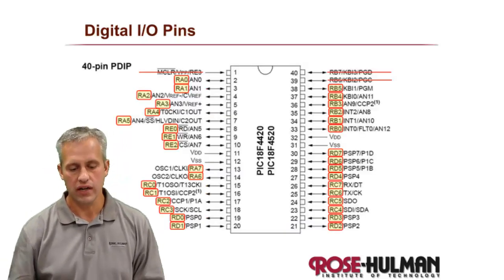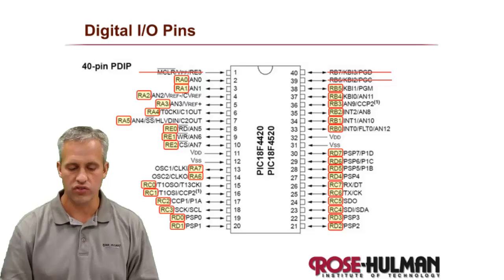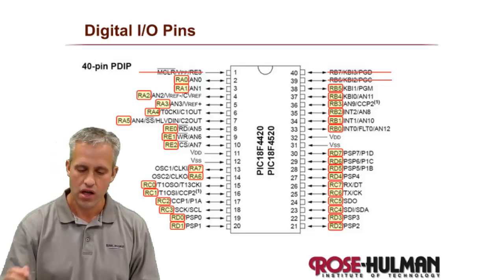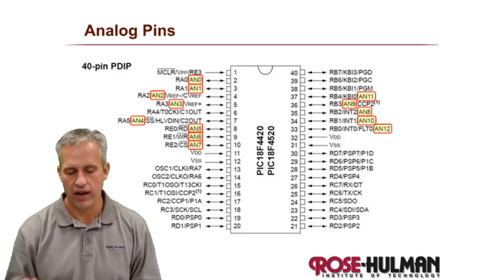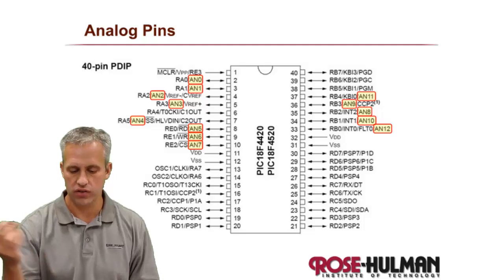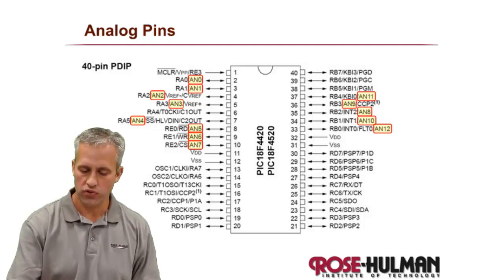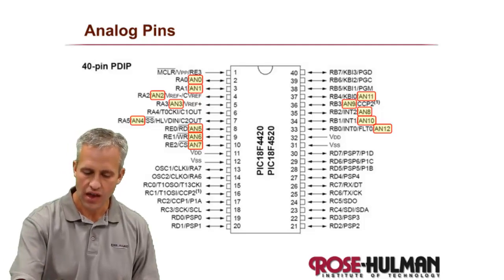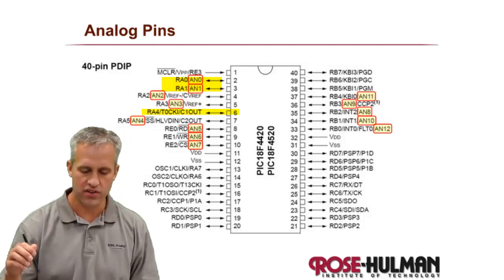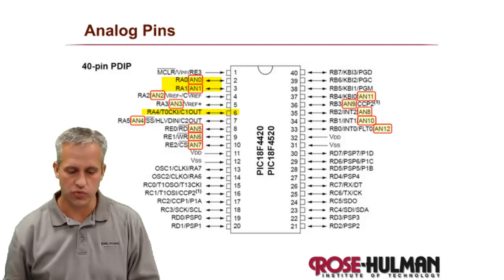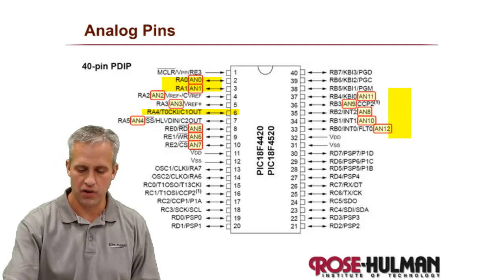There are 40 pins on the microcontroller. 33 of those can be used for digital IO, so there's a ton of digital IO. However, with analog there are only 13. They are called analog channel 0, labeled in here, 1, 2, 3, all the way up to analog channel 12. They show up on certain pins and they start on port A. For some reason RA4 does not have an analog channel. It does kind of jump around a little bit, especially on the RB side.